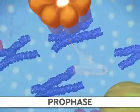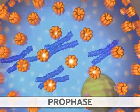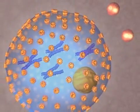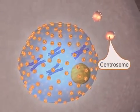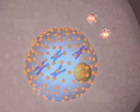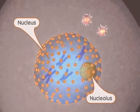At the same time, protein strands called microtubules appear from the centrosomes in animals. Finally, a structure found within the nucleus, the nucleolus, disappears.